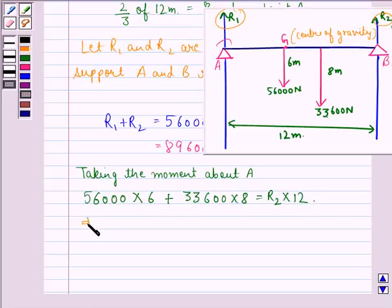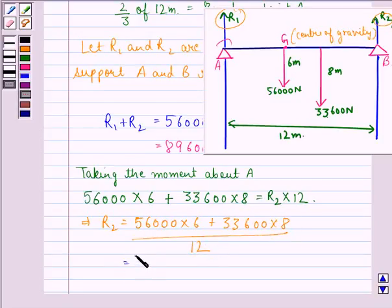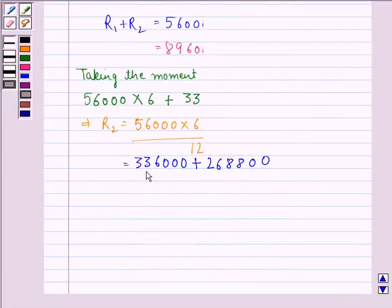This implies that R2 equals (56,000 Newton times 6 plus 33,600 Newton times 8) divided by 12. That equals (336,000 plus 268,800) divided by 12.